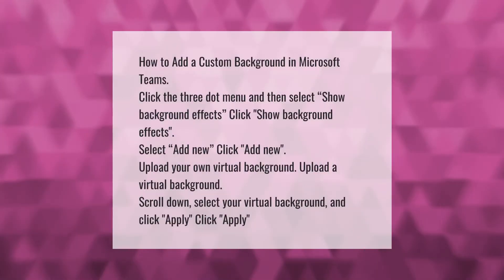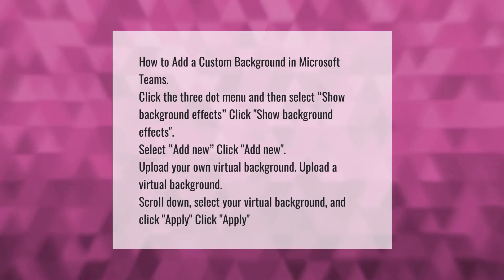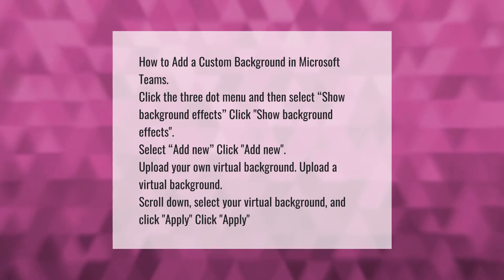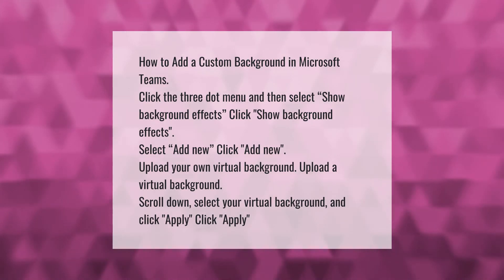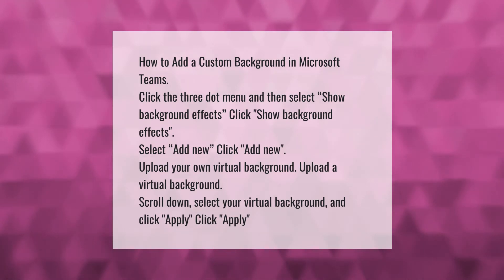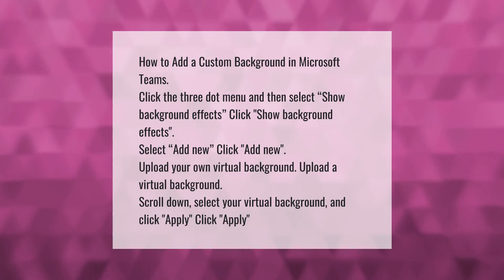How to add a custom background in Microsoft Teams: click the three dot menu and then select 'Show Background Effects'. Click 'Add New', upload your own virtual background. Scroll down, select your virtual background, and click 'Apply'.